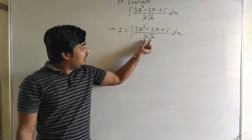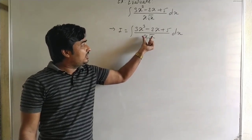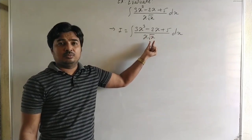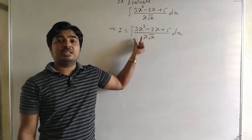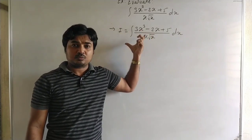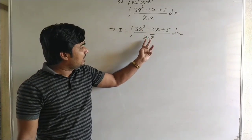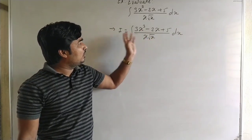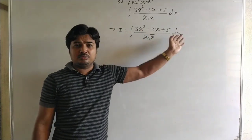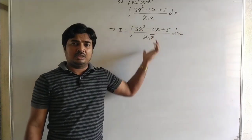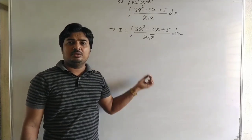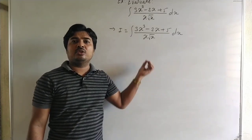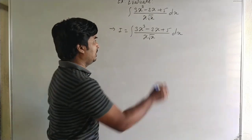We know that in the denominator it is a single term — x into under root x — that is x to the power 3 by 2. We separate all terms, and then automatically the terms are in addition or subtraction.